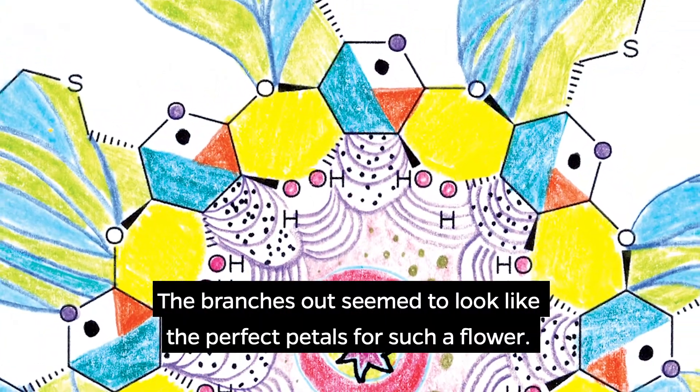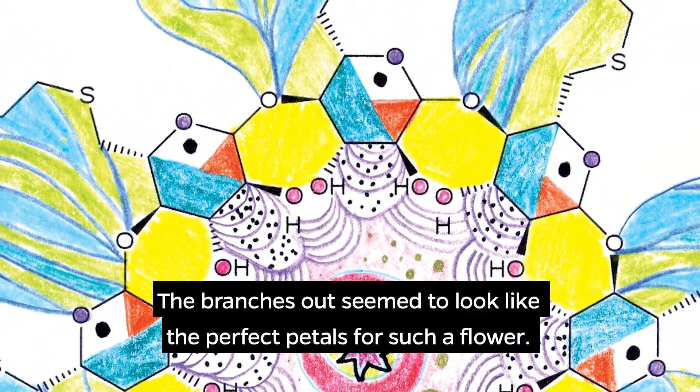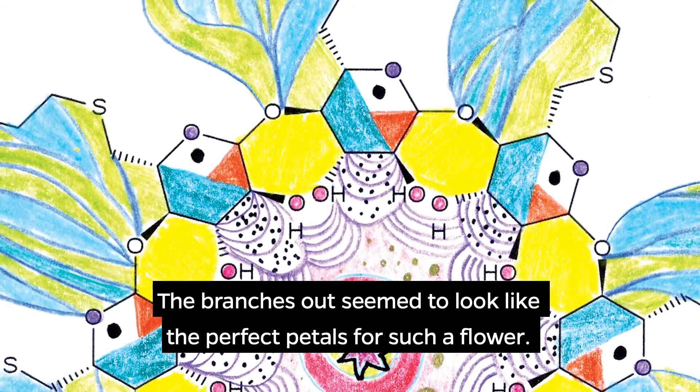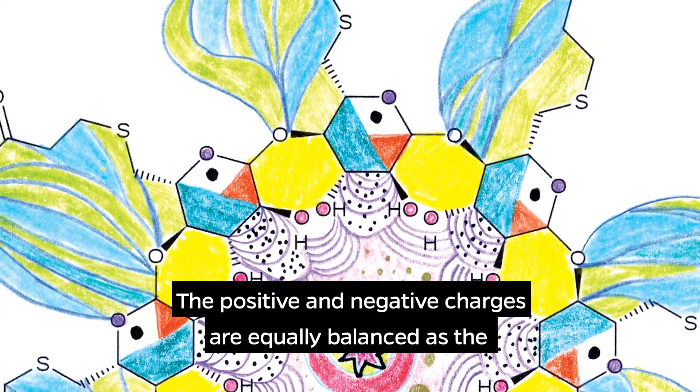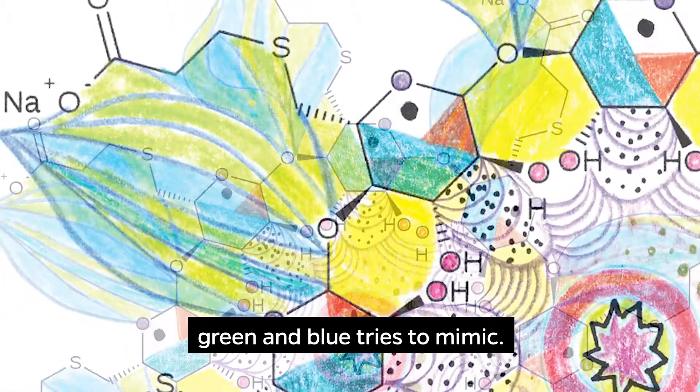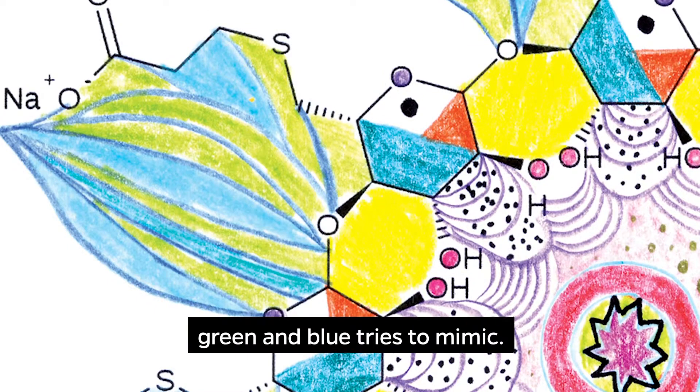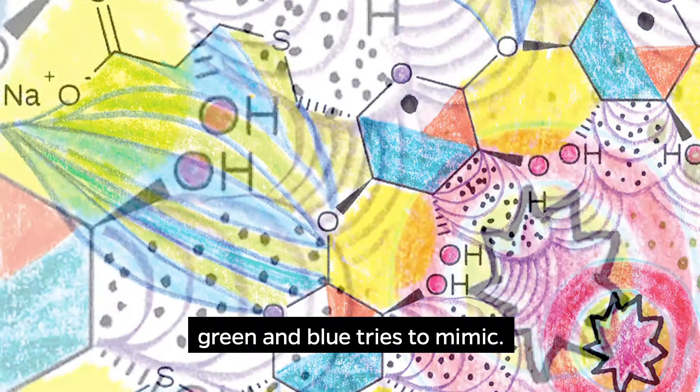The branches out seemed to also look like the perfect petals for such a flower. The positive and negative charges are equally balanced, as the green and blue tried to mimic.